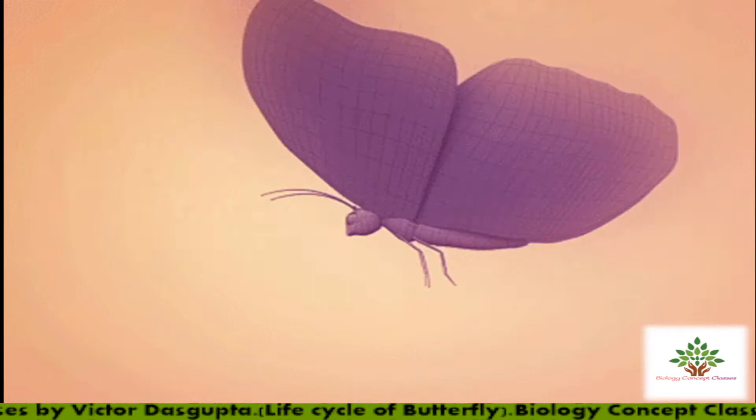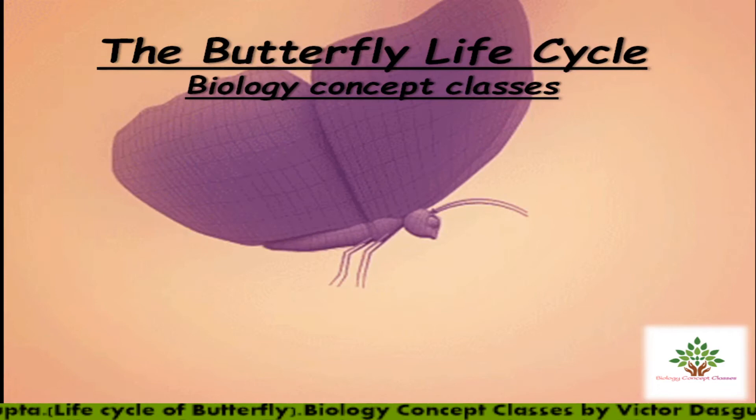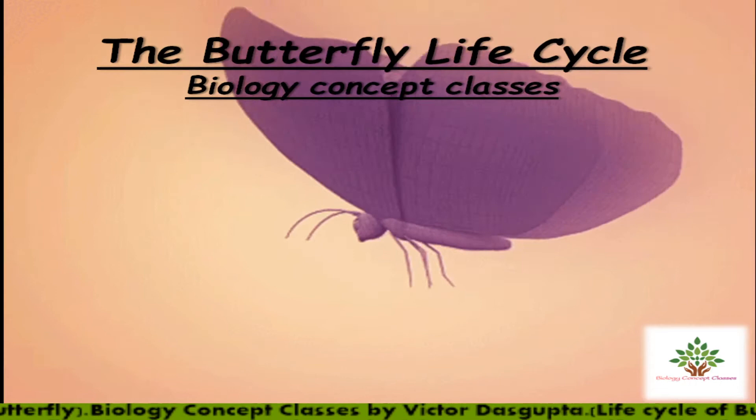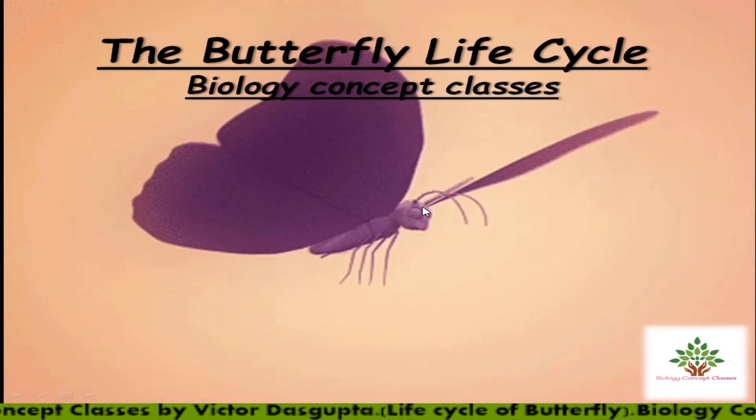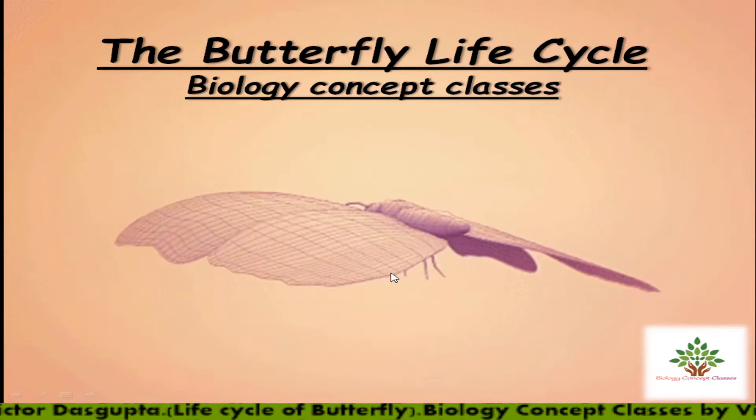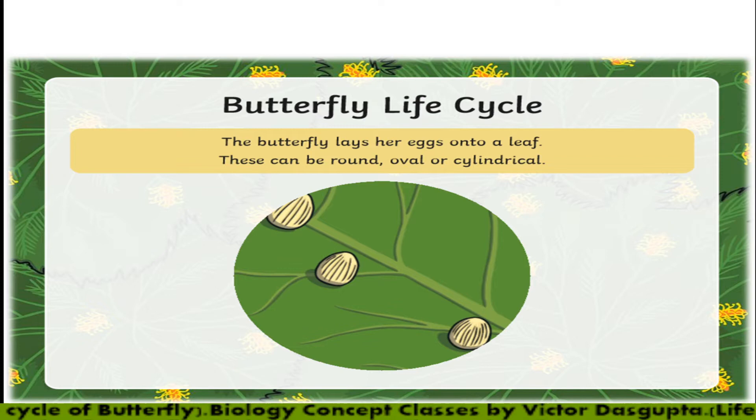Welcome everyone to biology concept classes. In this video we will discuss about the life cycle of the butterfly. As you can see, the butterfly is an insect, and the characteristics of insects — having three body parts: the head, the thorax, and the abdomen. So let's begin.